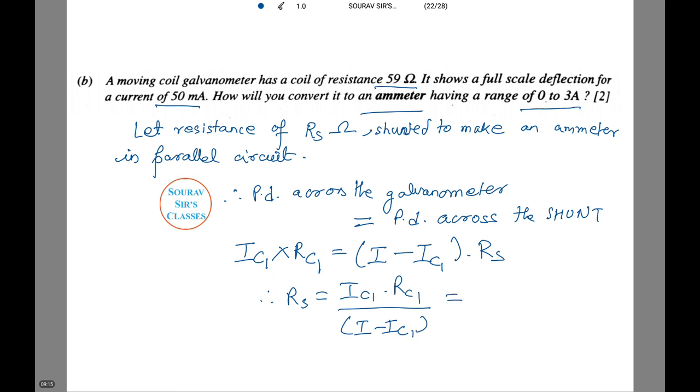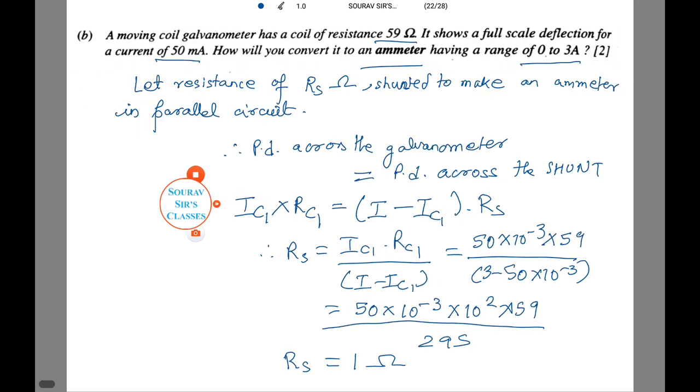Therefore, Rs equals Ig × Rg by (I - Ig). Putting in the values and calculating, we get Rs equals 1 ohms. This is the resistance that needs to be required to shunt in order to convert the moving coil galvanometer into an ammeter.